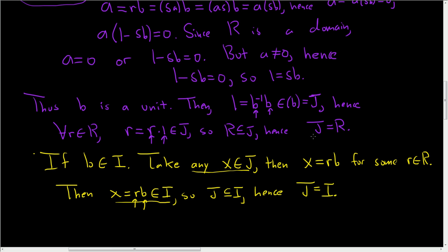So in any case, we either have J equal to R or J equal to I. This shows I is maximal. And so that's how you prove that every non-zero prime ideal of a PID is maximal.